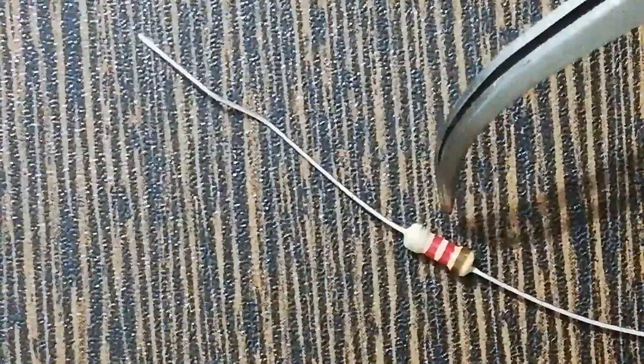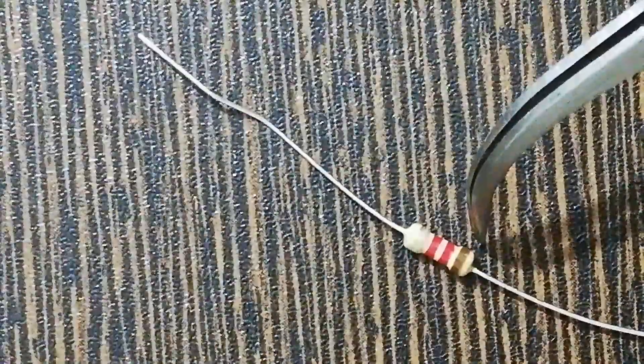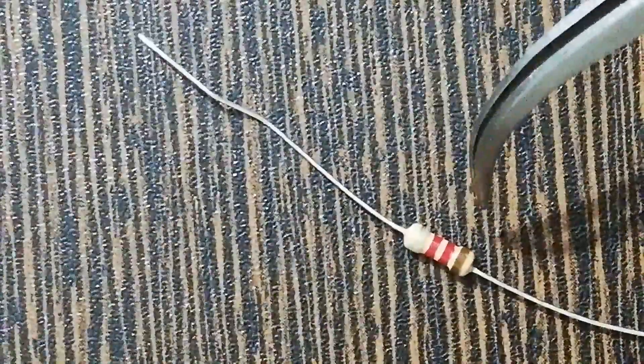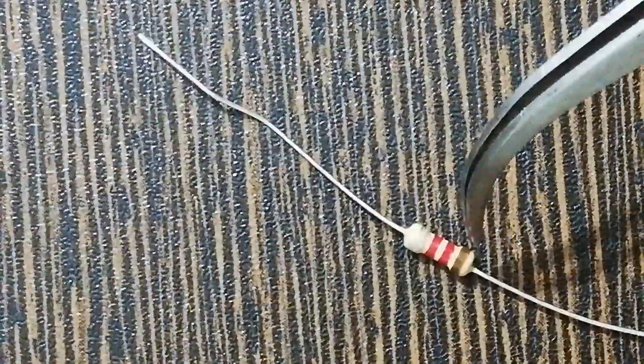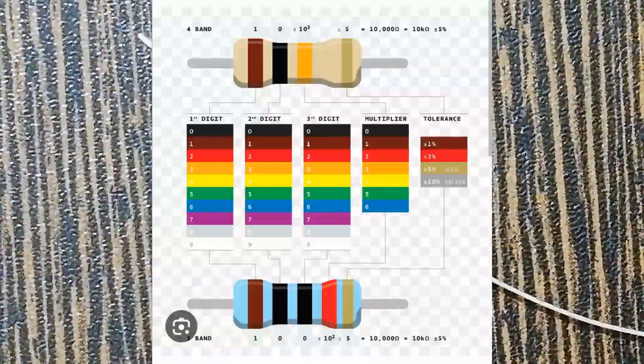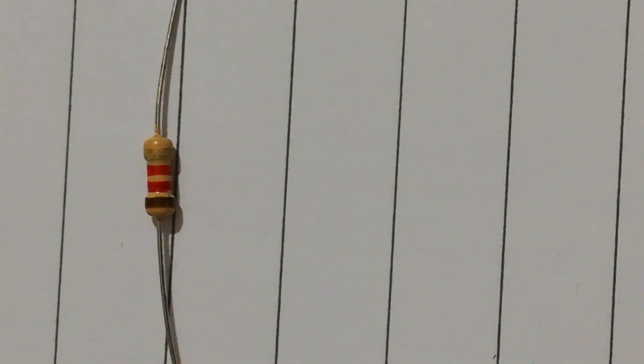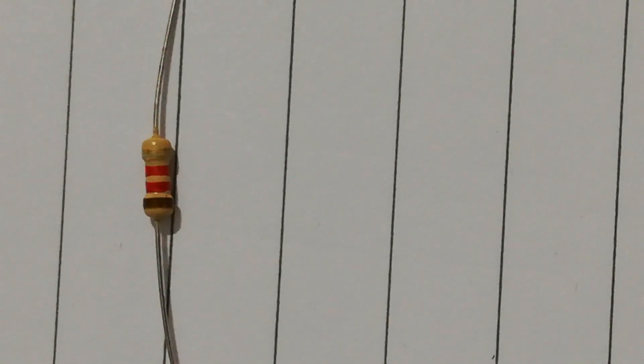So let's start to calculate the value of the resistor. The first color is brown, so we'll write the value of this color brown from the color code table. So here you go to calculate the value for the resistor.